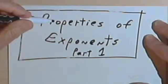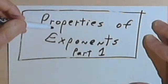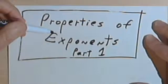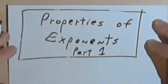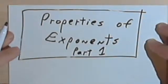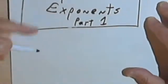This is going to be the first of a series of videos about the properties of exponents. Let's start with what happens when you multiply two numbers with exponents.